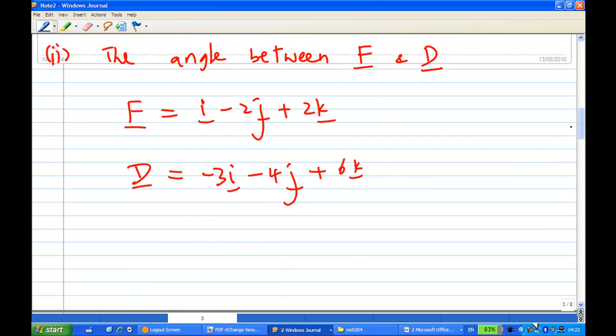Next part, find the angle between F and D. I have copied down D computed from earlier. The angle between F and D, you can use the scalar product to help you, because if we use F dot D, this is the length of F, the length of D, cosine of theta, where theta is between F and D.